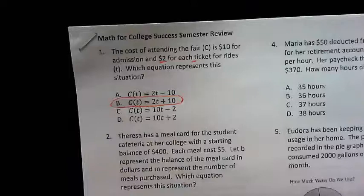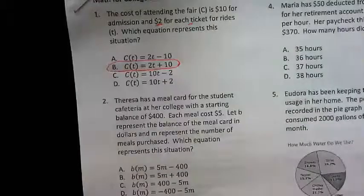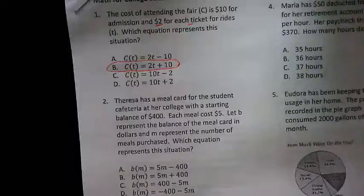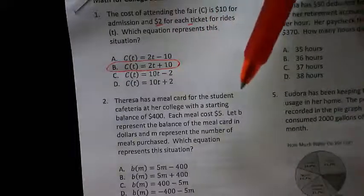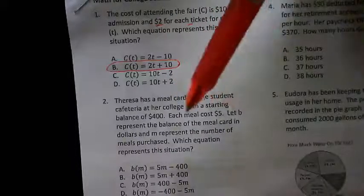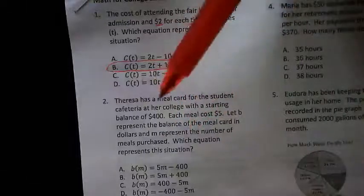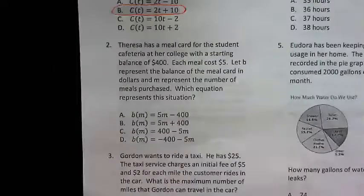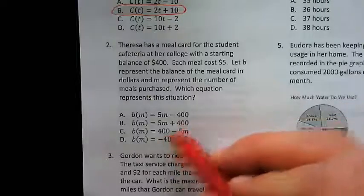The equation that correctly represents 2t plus ten dollars would be B, giving us our total cost of going to the fair. Number two: we have a meal card for a student cafeteria with a starting balance of 400. Each meal costs five dollars. Let b represent the balance and m the number of meals purchased. The 400 is our starting value, like our y-intercept, so only options B and C have positive 400.